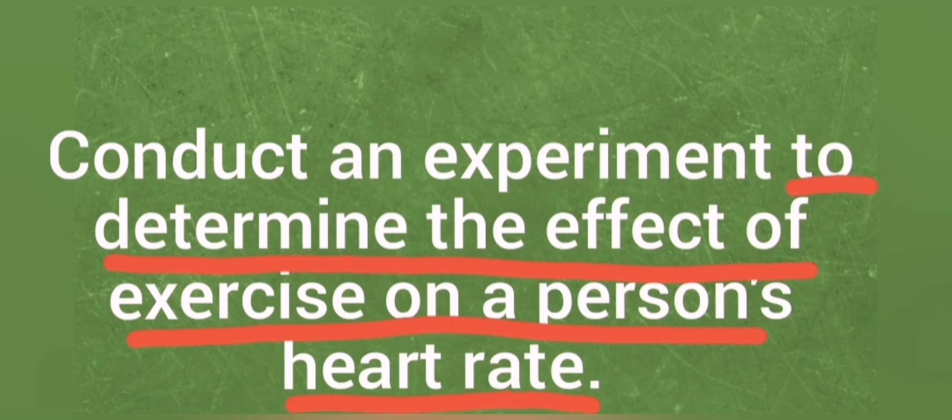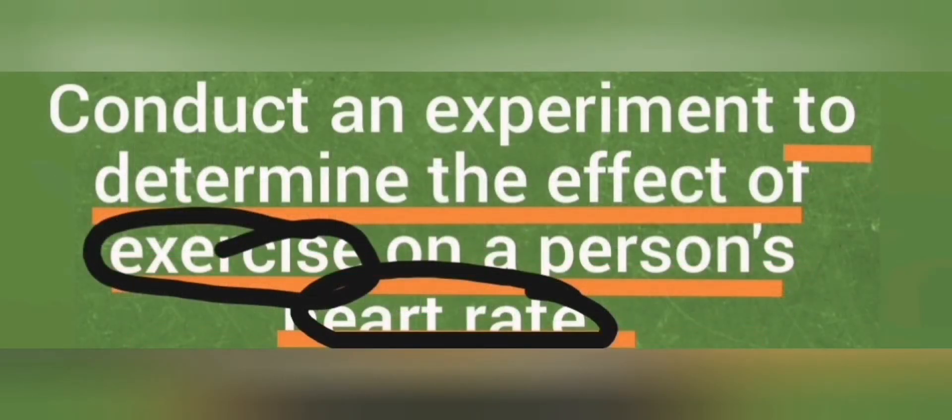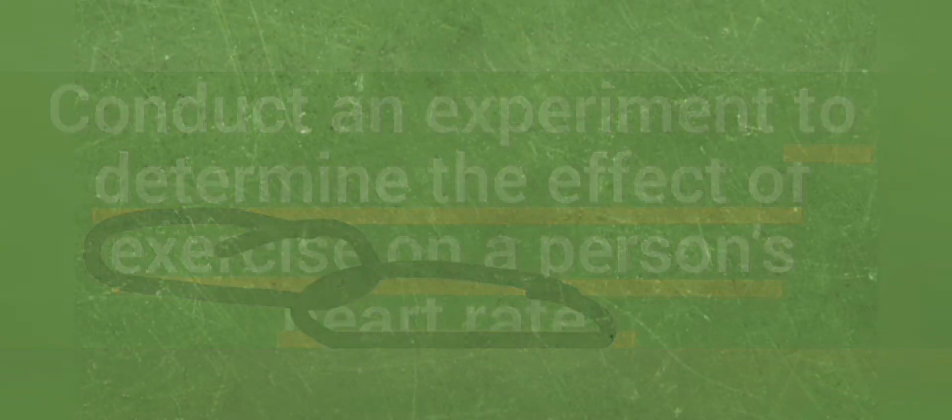So this is what you do next. So first of all when you look at the underlined which is your aim, find the keywords and circle them. The keywords here are exercise and heart rate. So exercise and heart rate since these are your key keywords, these will also be your variables.